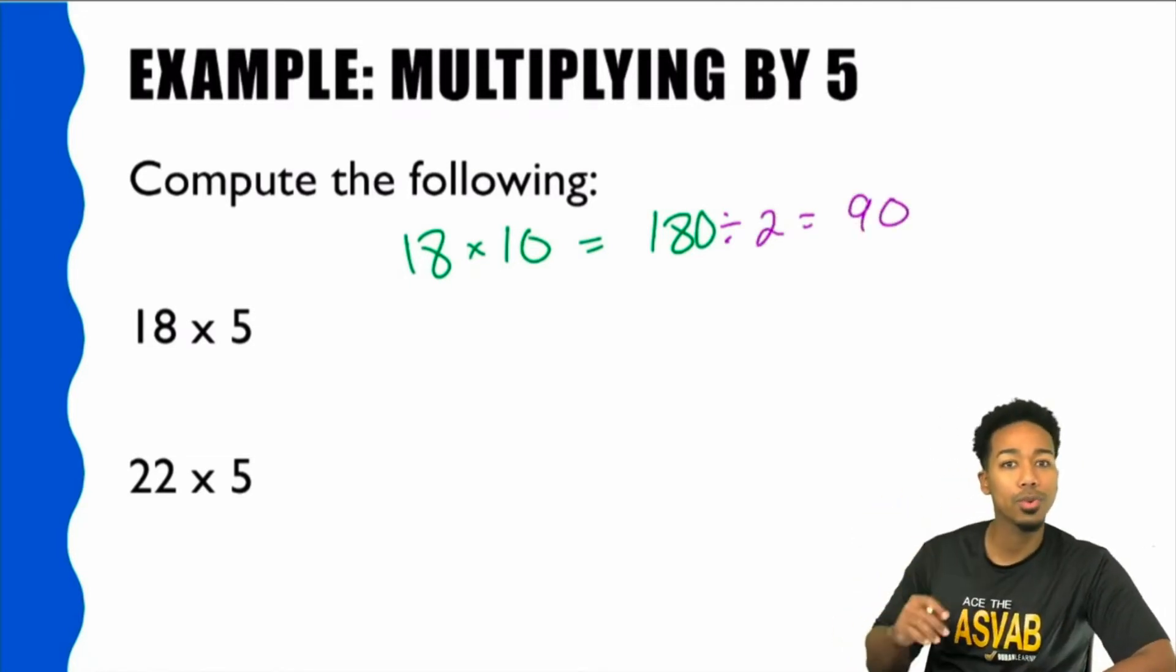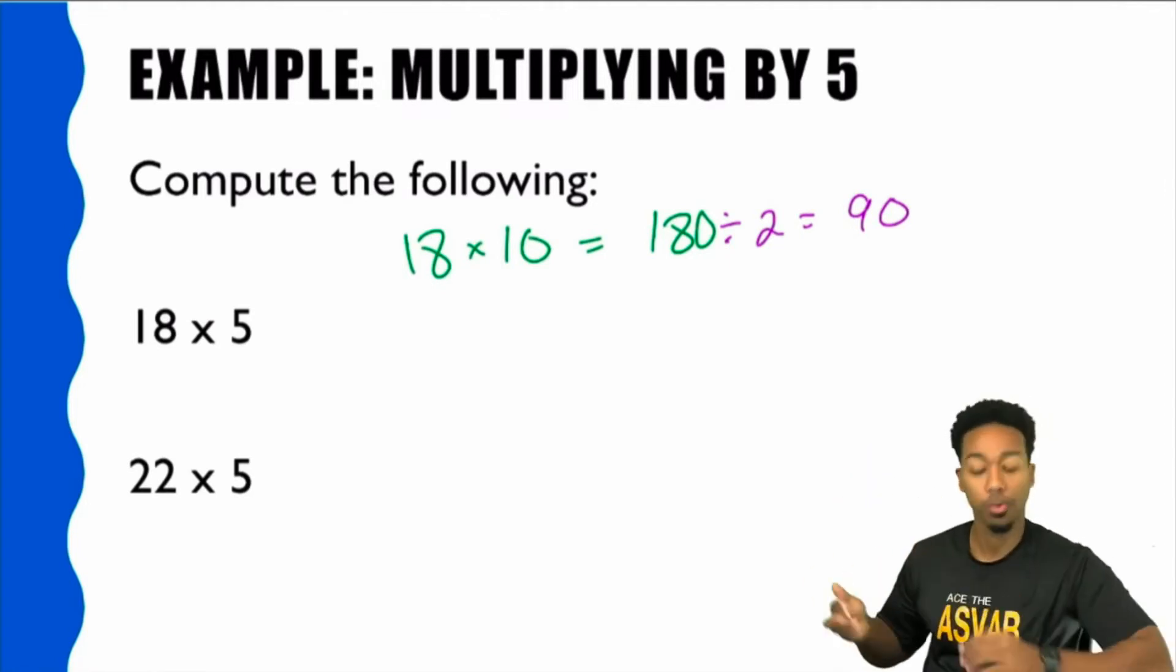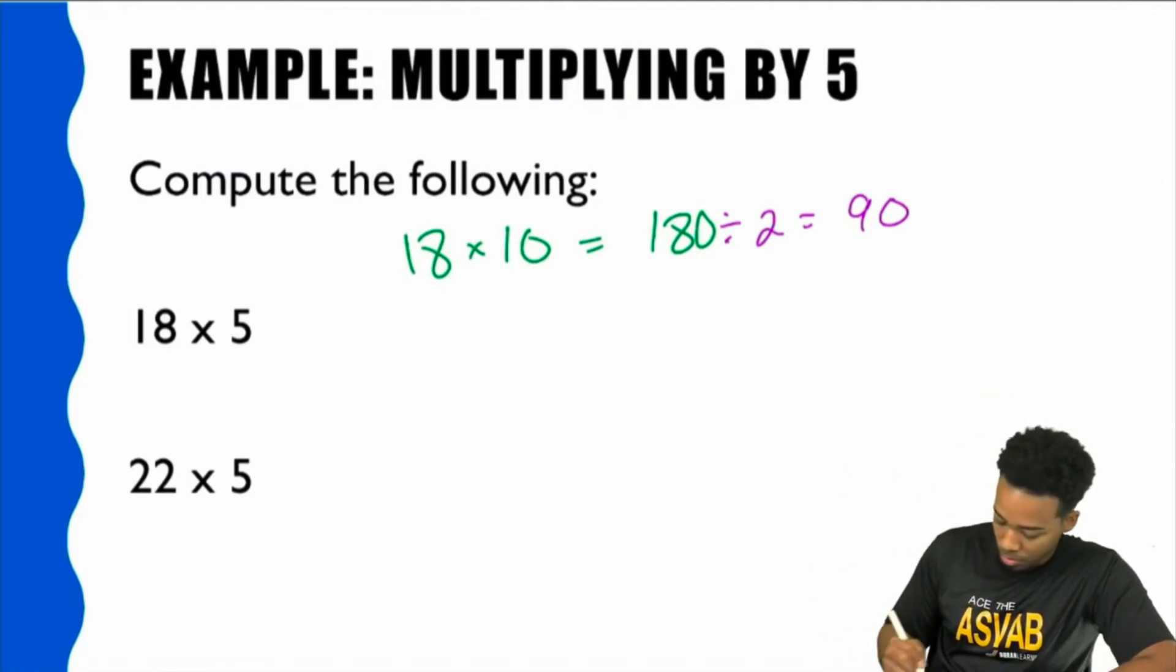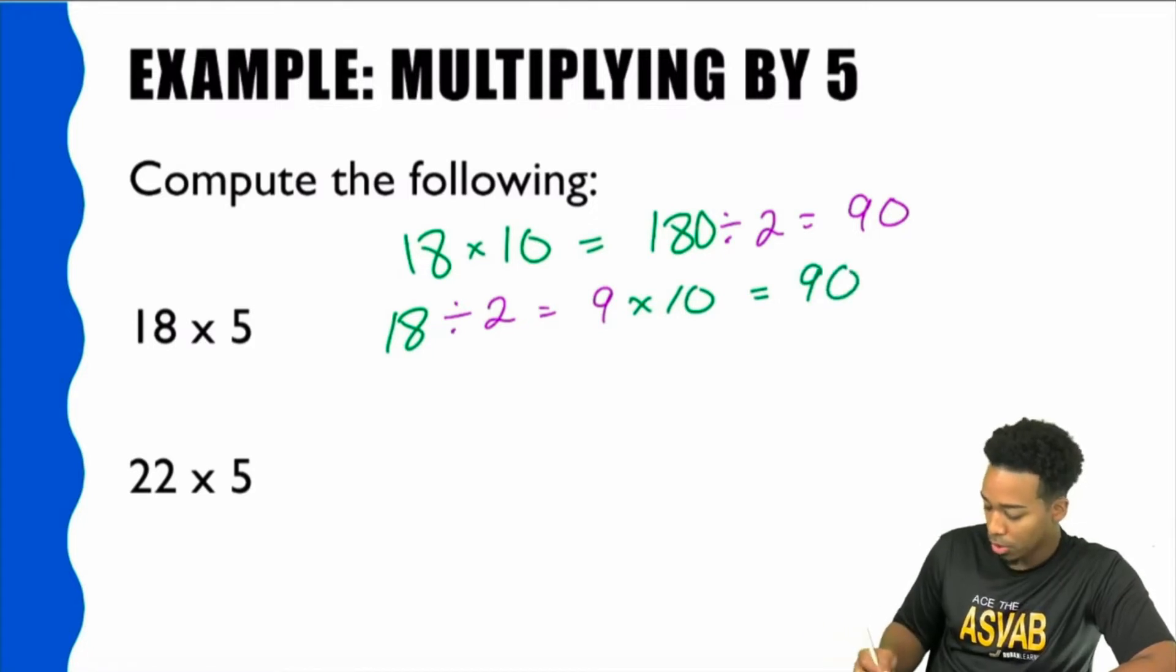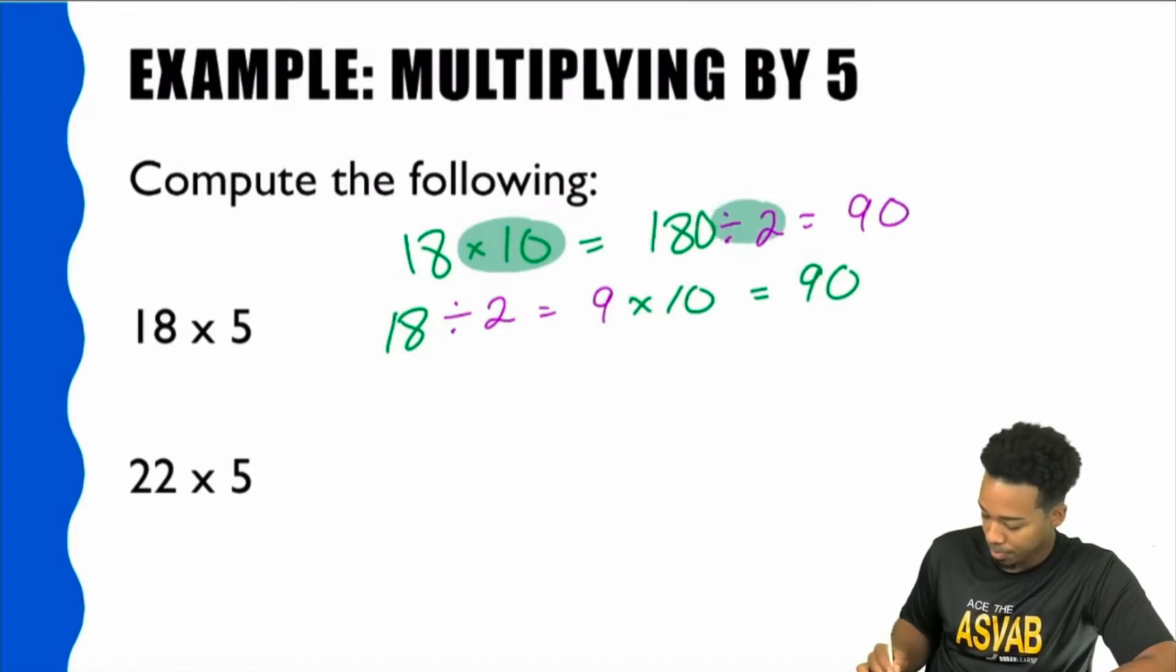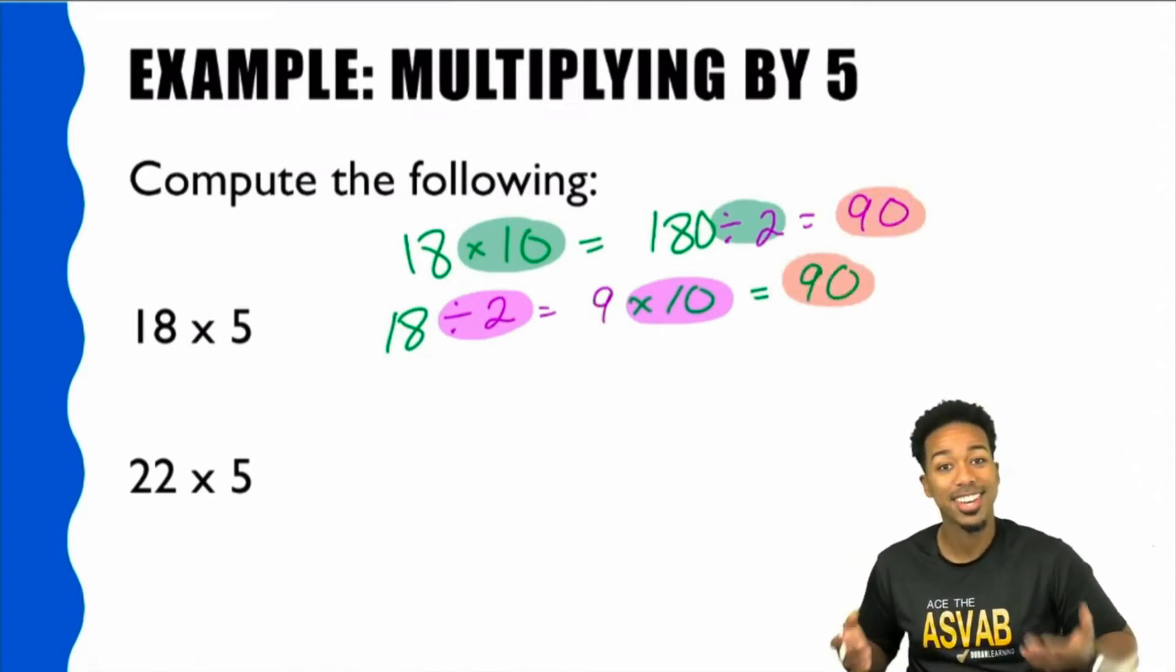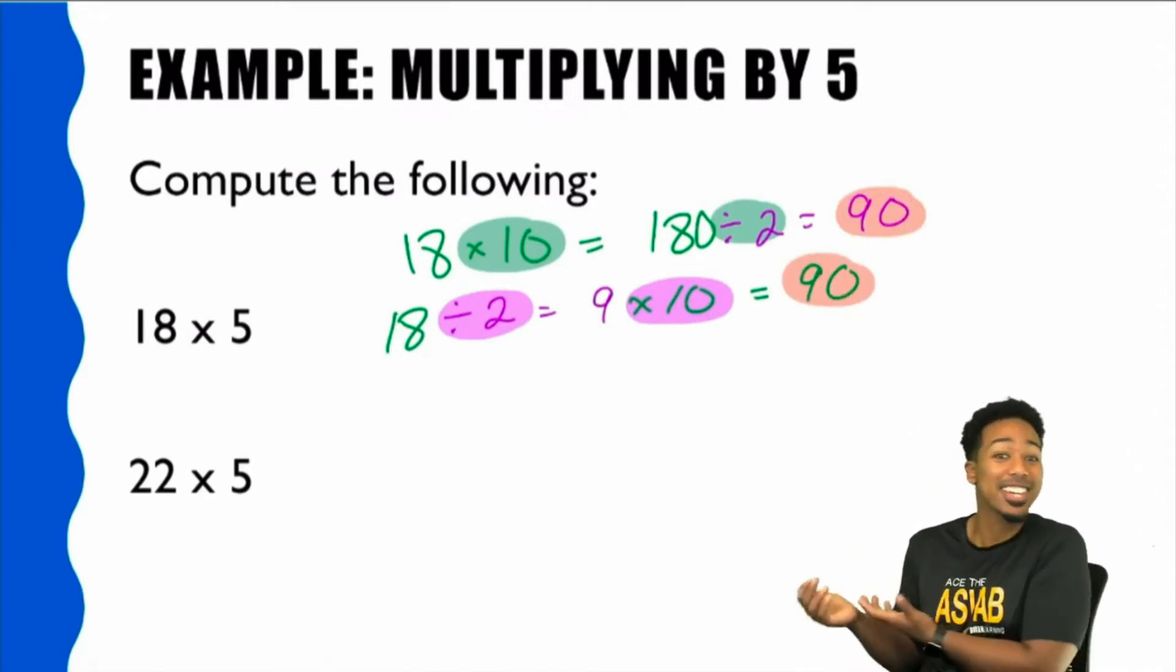You can do it the other way as well. And I'm going to show you the normal way to show you that it works. But you can also start off again with 18. You can go ahead and start off by dividing by 2, which gives you 9, and then multiply by 10 to give you 90. So notice both of these strategies work. You can multiply by 10, then divide by 2, or you can divide by 2, then multiply by 10. Either way, you still get the correct answer. You still get the correct answer either way. It's awesome.